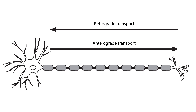The packaged peptides need to be transported to the presynaptic terminal to be released into the synaptic cleft. Organelles, vesicles, and proteins can be moved from the cell body to the terminal via anterograde transport, or from the terminal to the cell body via retrograde transport. Anterograde transport can be either fast or slow. The packaged neuropeptides are transported to the synaptic terminals via fast anterograde axonal transport mechanisms.